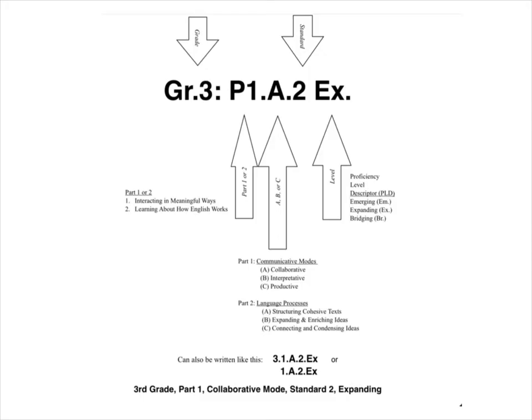For this example, the standard is in Part 1, the cool colors, interacting in meaningful ways. Then we need to say under which standard — A, B, or C. If in Part 1, which communicative mode? A: collaborative; B: interpretive; or C: productive.